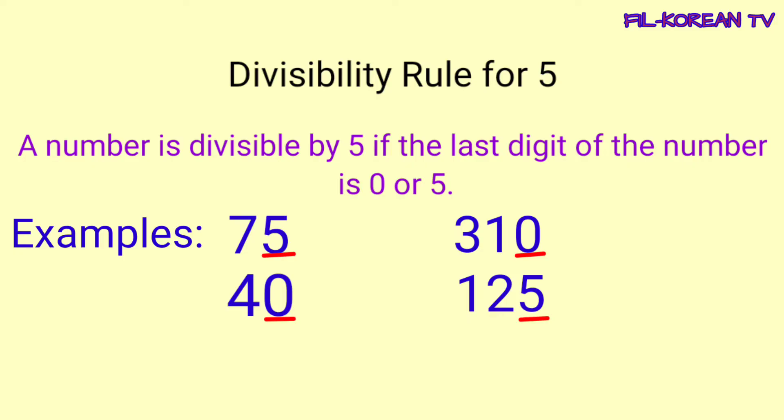Titingnan lang ninyo yung last digit. Kapag nagtatapos sa 0 o kaya 5, automatic divisible by 5 ang number na yan, kahit gaano pa yan kalaki. At kapag ang number ay hindi nagtatapos sa 5 o sa 0, syempre hindi rin sya divisible by 5.